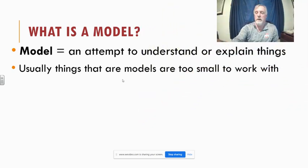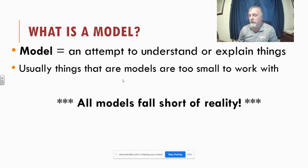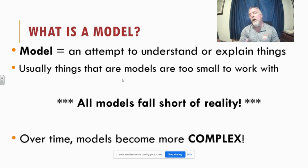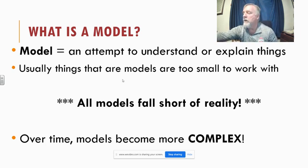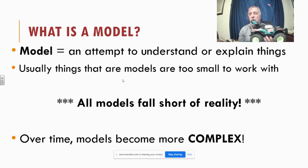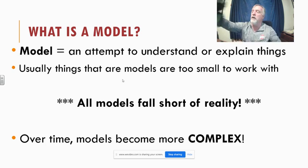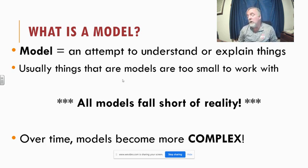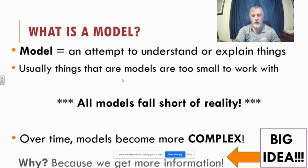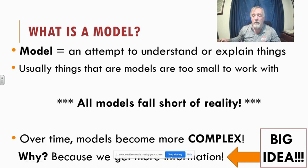The more we learn, the more we can do with things. Models will always fall short of reality — if it were really a car, it would be a car, not a model. But as time goes on, our models get more complicated. We went from a matchbox car to one with moving pieces, to one that moves on its own, to one that can be controlled remotely going forwards and backwards. The same sort of thing has happened with our understanding of atoms — the models get more complex because we've learned more.